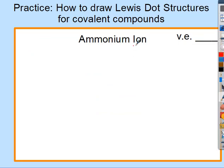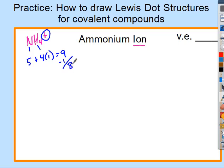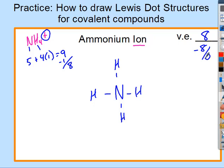The ammonium ion is NH4⁺. Add up valence electrons: nitrogen has five, each hydrogen has one, times four — totaling nine. But it's a positive one ion, so subtract one. Negative ions you add to the total; positive ions you subtract. That gives us eight valence electrons. Nitrogen goes in the middle with four hydrogens. After using all electrons, nitrogen has eight — the structure is complete. Since it is an ion, place it in brackets with the charge on the outside.